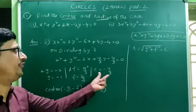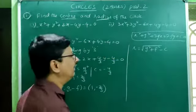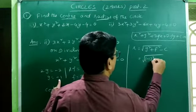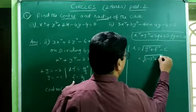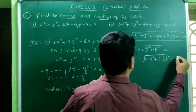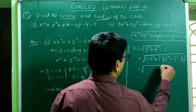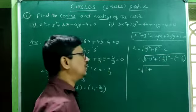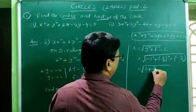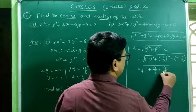Substituting the values of g, f, and c: r = √((−1)² + (2/3)² − (−4/3)). Since the power is even, (−1)² = 1. And (2/3)² = 4/9. Minus of minus 4/3 gives plus 4/3.